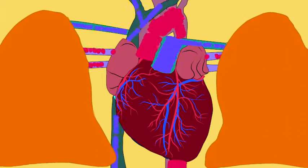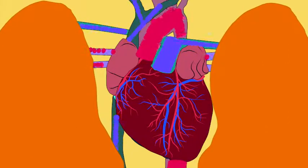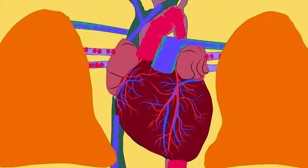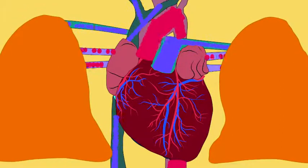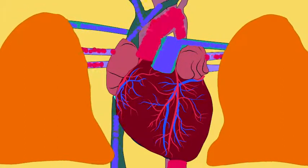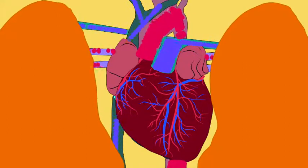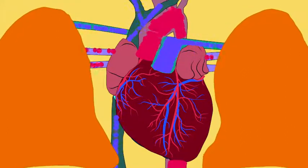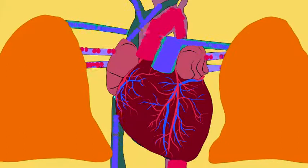A red blood cell may contain 250 million molecules of hemoglobin, and hemoglobin changes its hue depending on whether it has bound oxygen, making it a brighter red, or carbon dioxide, making it cyanotic in color.